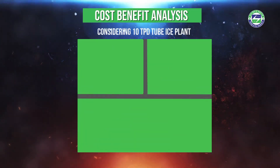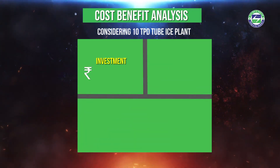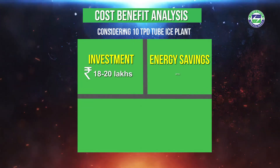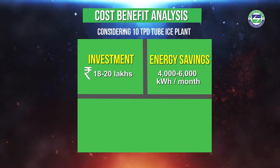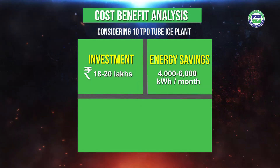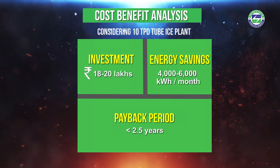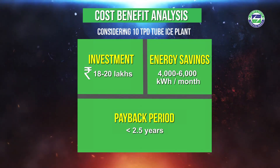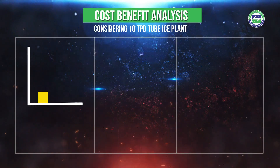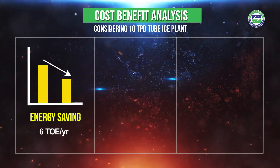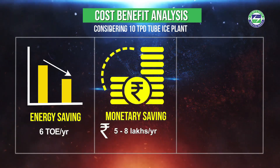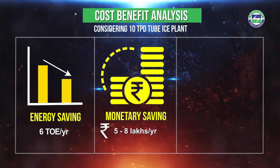For a 10 TPD tube ice plant, the investment required is 18 to 20 lakh rupees. The installation leads to a saving in electrical energy consumption of 4,000 to 6,000 kilowatt hours per month, and the investment can be recovered within 2.5 years. The installation leads to an energy saving of 6 tons of oil equivalent and a monetary saving of 5 to 8 lakh rupees per year.